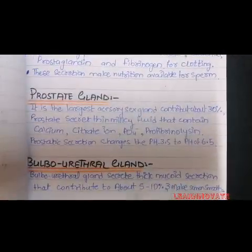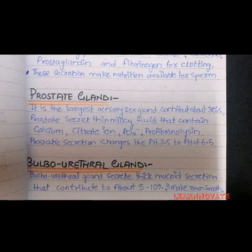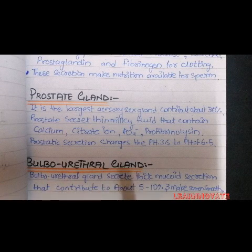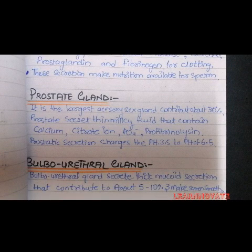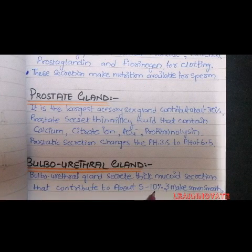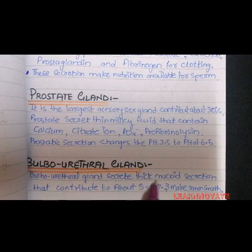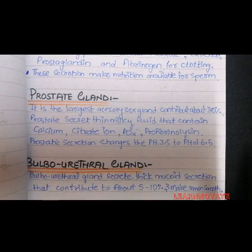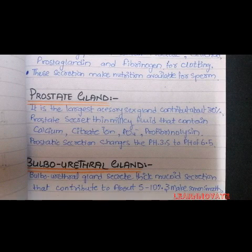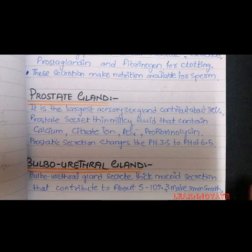The last gland is the bulbourethral gland, which is smaller but contributes about 5-10% of the secretion. Anatomically, the bulbourethral gland is a pea-sized gland present in the deep perineal pouch in the perineum. Its secretion is thick and mucoid. The function of this mucus is to make the pathway of the sperm smooth so that the sperm and semen can move easily and ejaculate at the time of ejaculation.